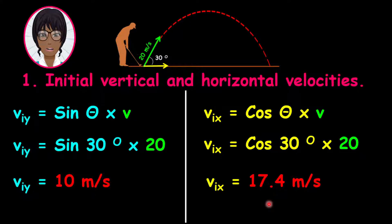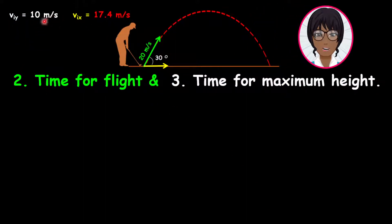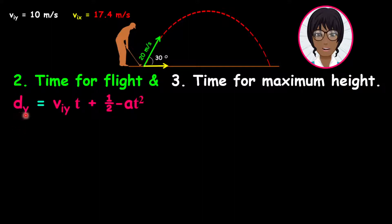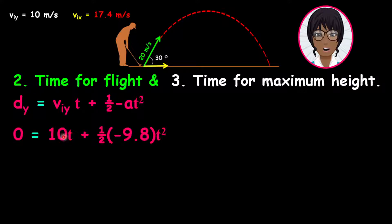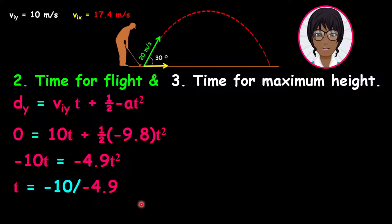Now we are going to questions 2 and 3. The values for the initial vertical and horizontal velocities are placed on top of the page for convenience. The time for the flight can be calculated using the formula: dy equals the initial velocity in the y component multiplied by time, plus half negative acceleration multiplied by time squared. Remember that dy at the end of the flight is 0 because the ball is on the ground. Therefore, 0 equals 10t plus half negative 9.8 multiplied by time squared. From this we get negative 10t equals negative 4.9 multiplied by time squared. Therefore, time equals negative 10 divided by negative 4.9, giving us 2.04 seconds.